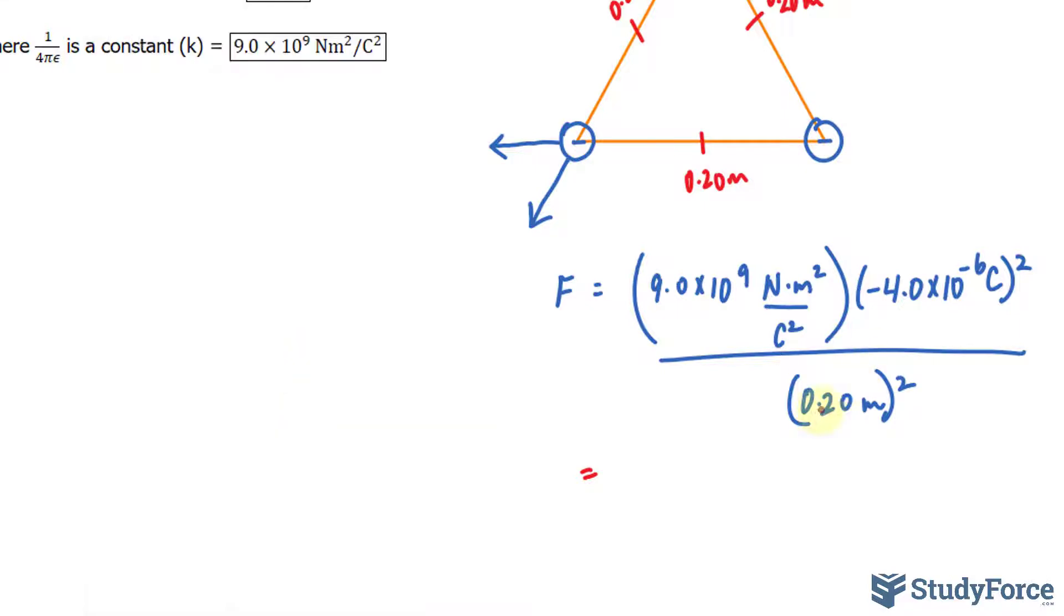We should have two significant figures, since this is two significant figures and that one is as well. We end up with an answer of 3.6 Newtons.